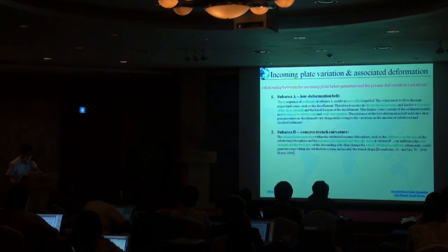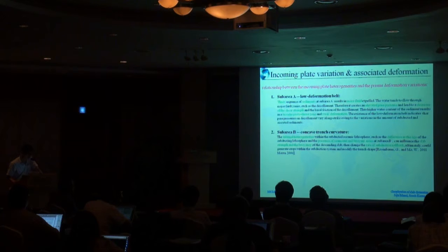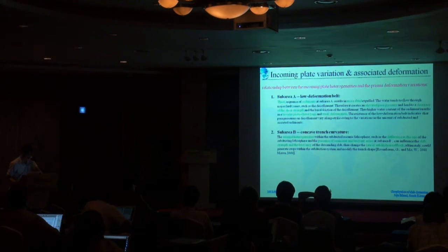The internal heterogeneity within these parts of the oceanic lithosphere includes differences in age compared with the north and south, also the existing seamounts and the buoyant mass. This will influence the strength and buoyancy of the descending slab and will change the rate of the subduction rollback and ultimately could modify the trench shape.